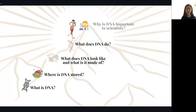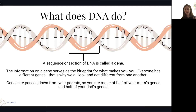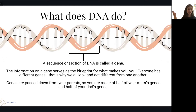We've talked about what DNA looks like and what it's made of — now let's talk about what DNA does. A sequence of DNA is called a gene, and the information on a gene serves as the blueprint for what makes you, you. Everyone has different genes, which is why we all look and act differently. We all have DNA, but the DNA is different — that's why maybe I have blue eyes and brown hair, but you might have brown eyes and blonde hair. Genes are passed down from your parents, so you're made of half your mom's genes and half your dad's genes, which is why you usually look like your parents and even your siblings.